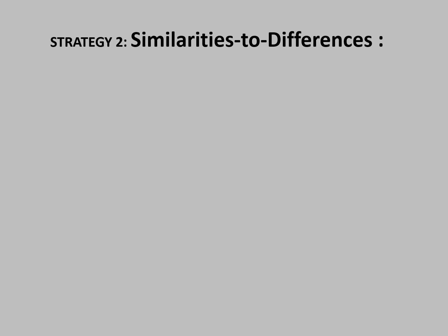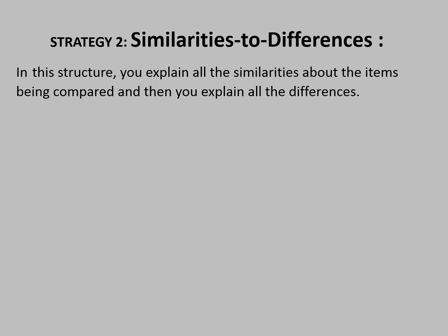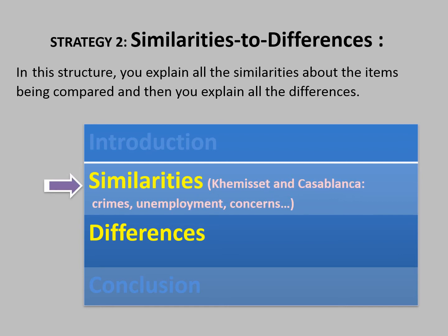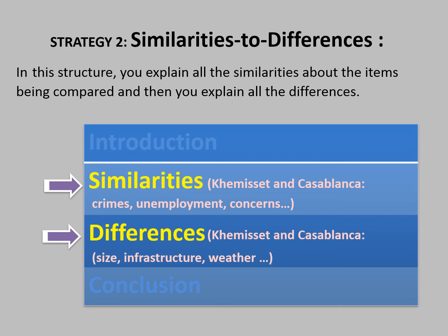Strategy number two: similarities to differences. In this strategy, you explain all the similarities about the items being compared. Using the example of Chmisat and Casablanca: you write your introduction, go to the similarities section and talk about crime, unemployment, people's concerns, etc. in both cities. Then you move to the differences section and talk about differences in size, infrastructure, weather, etc.